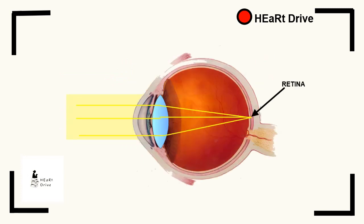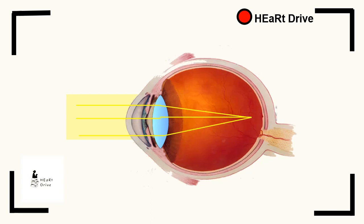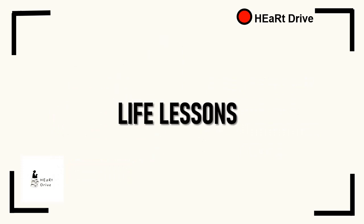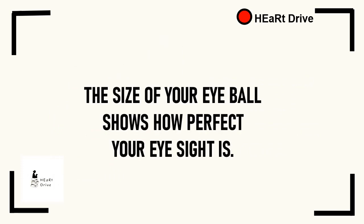When the human eye elongates, the light focused cannot be converged on the retina. This makes far away objects look blurred, and this is how short-sightedness occurs.